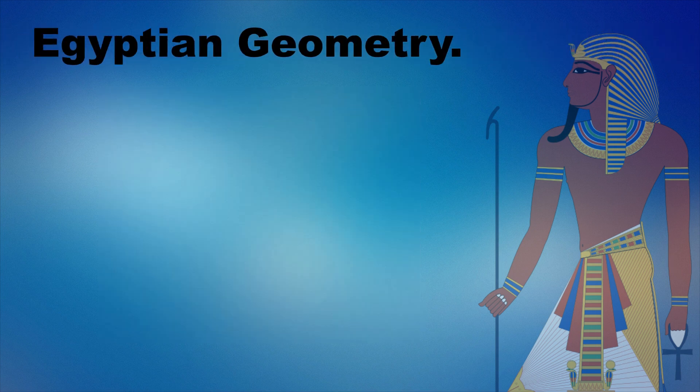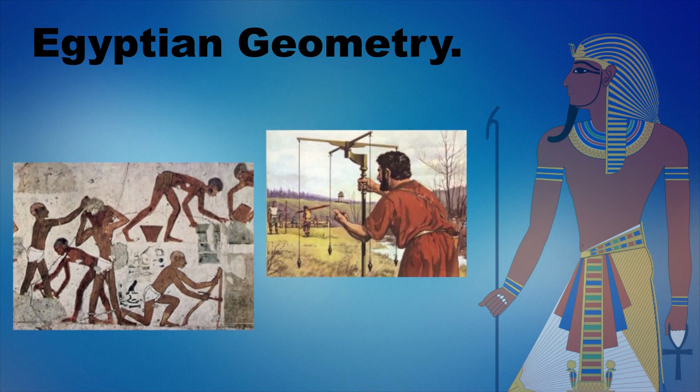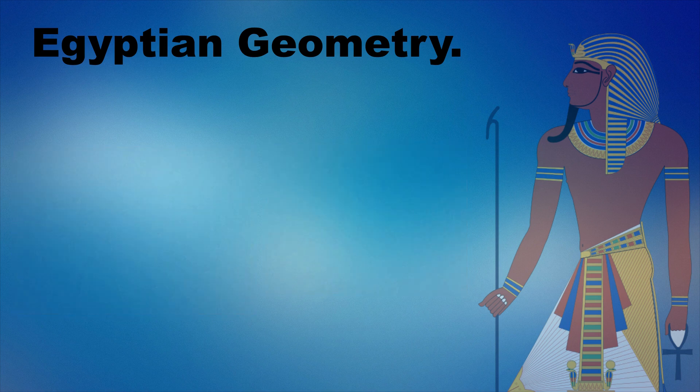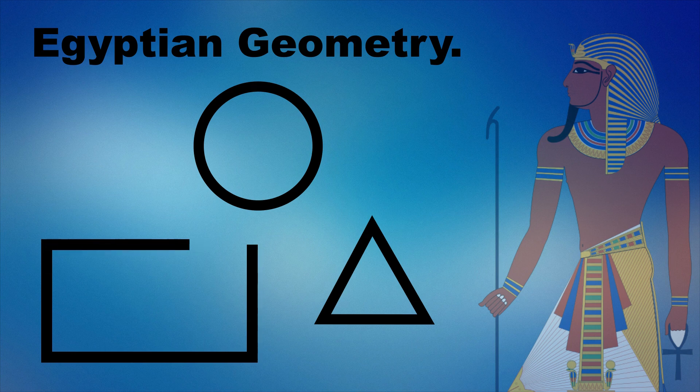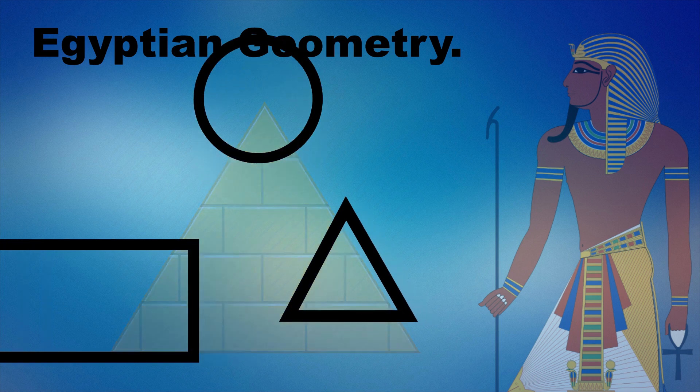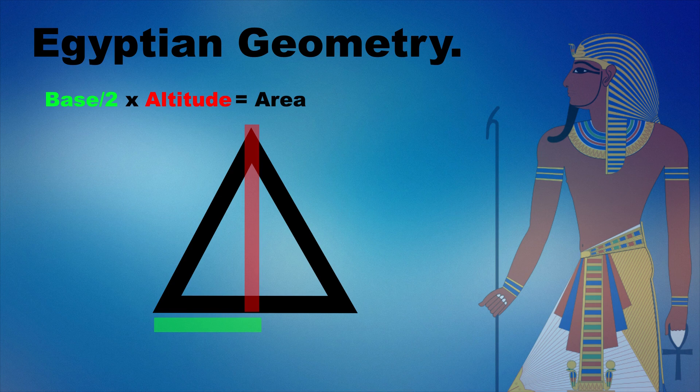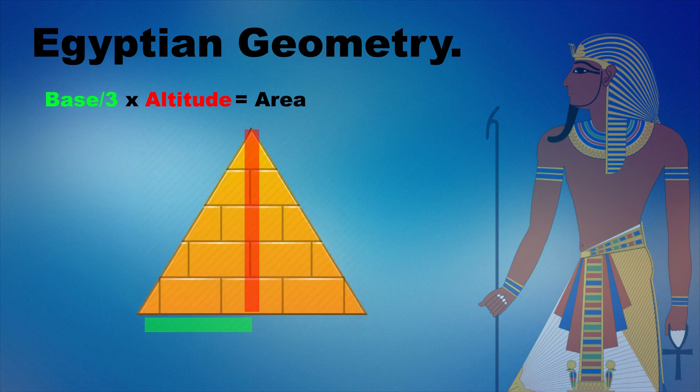The Egyptians also made achievements in geometry. Their geometrical knowledge was mainly focused towards solving practical problems, including those by surveyors and builders. They were able to calculate areas of simple plane figures such as circles, rectangles and triangles, and the volume of simple solids like the pyramid. For example, to find the area of a triangle, they took one half of the length of the base of the triangle, times the triangle's altitude. To find the area of a pyramid, they instead took one third of the base of the pyramid, times the pyramid's altitude.